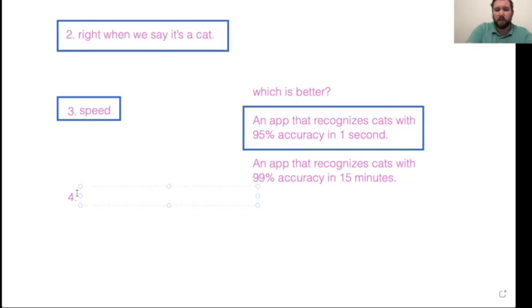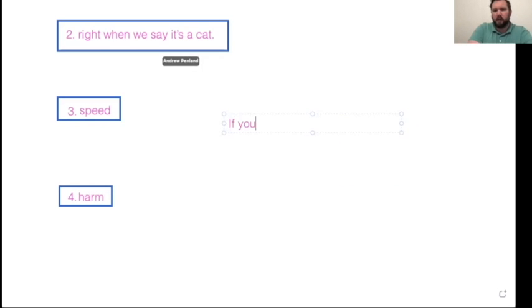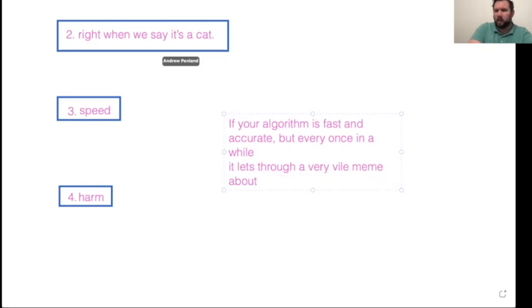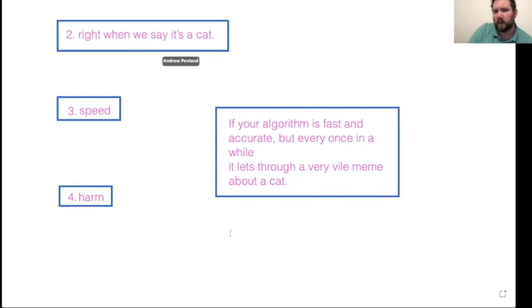Another concern that you have in terms of user experience that's not something a mathematician might typically think about is you have the potential for harm. So people who want to see pictures of cats typically don't want to see pictures of cats being harmed. Or they wouldn't want to see a pornographic picture by accident when they're expecting to see cute pictures of cats. It may be worth it to have an app. So this is something, again, where you have to make these trade-off decisions. If your algorithm is fast and accurate, but every once in a while it lets through a very vile meme about a particular cat doing something, is that better or worse from your business perspective than an algorithm that is slightly less fast and slightly less accurate that catches offensive material 100% of the time?